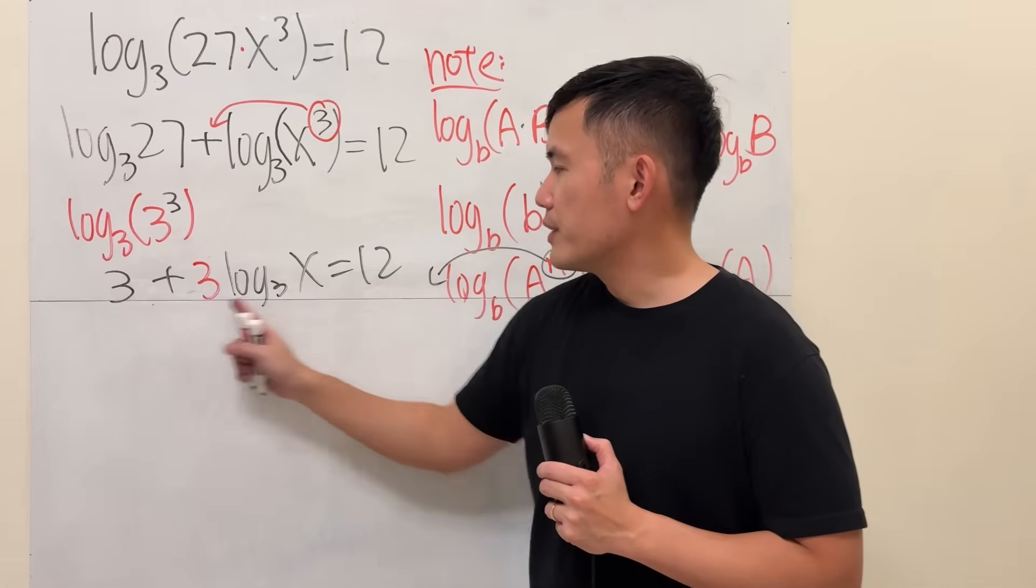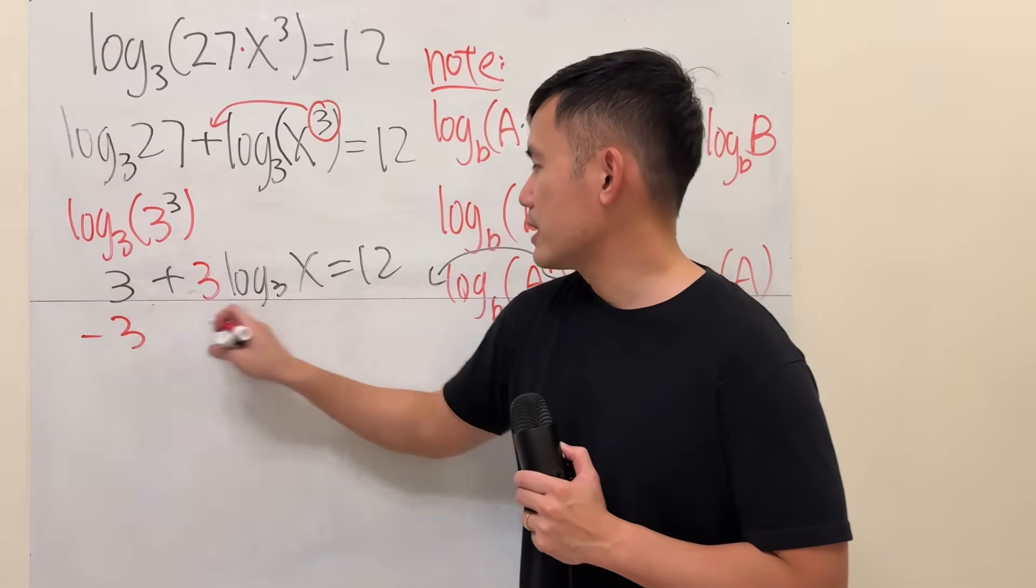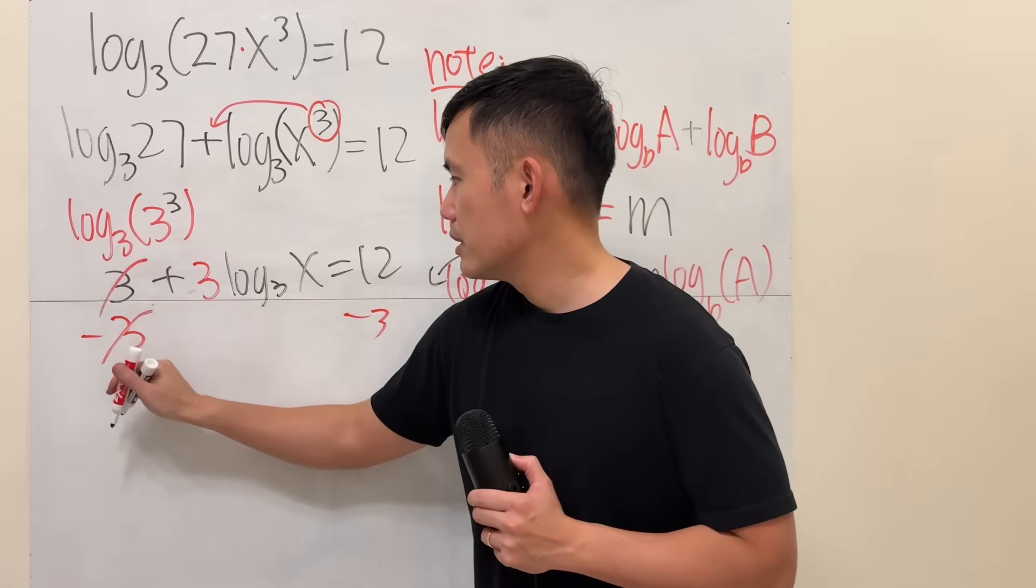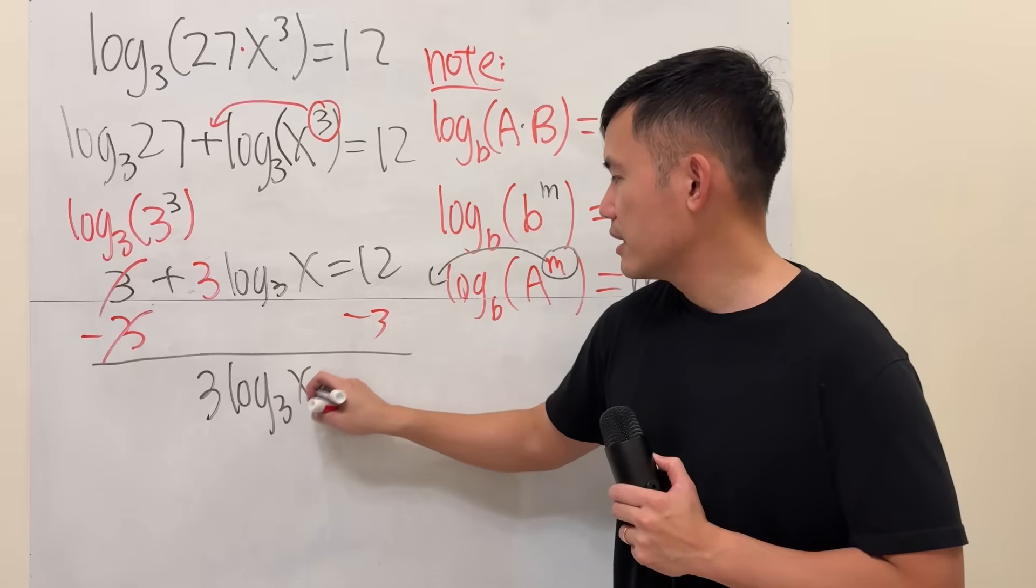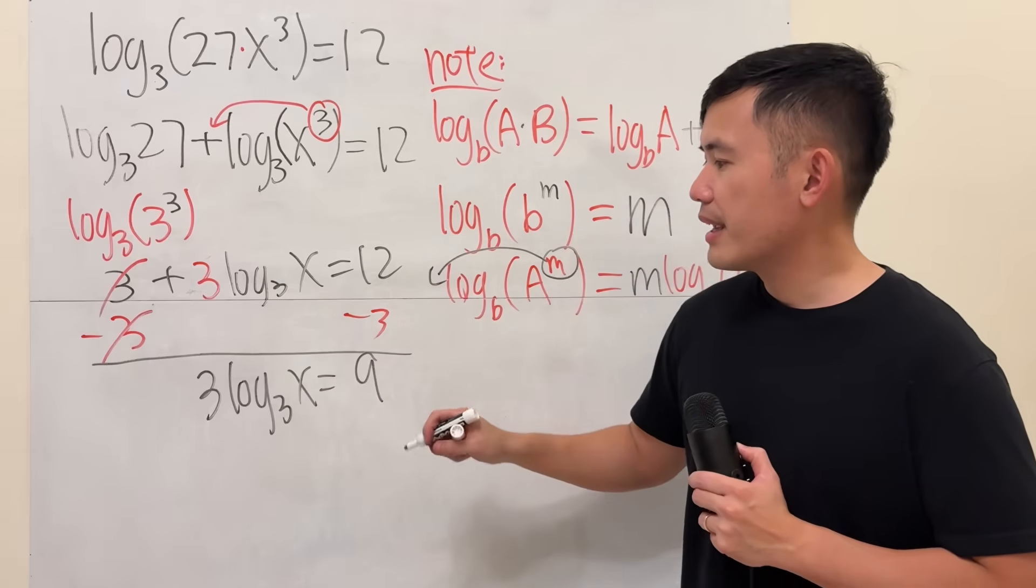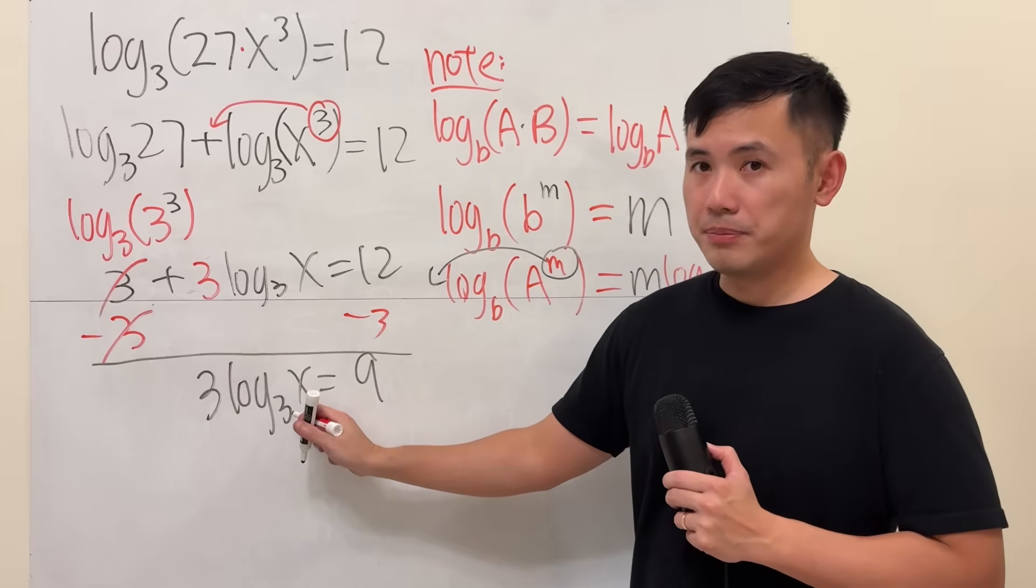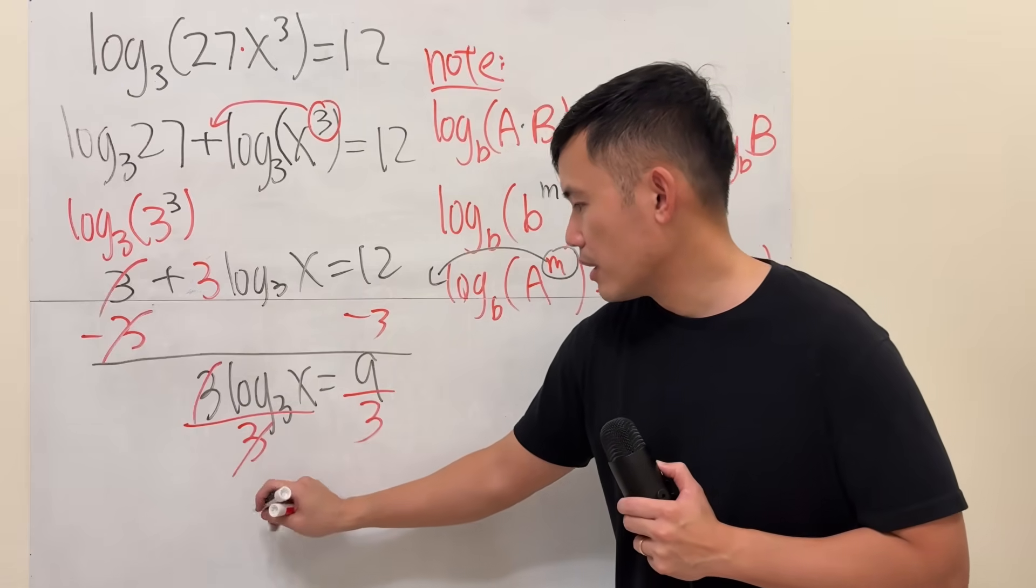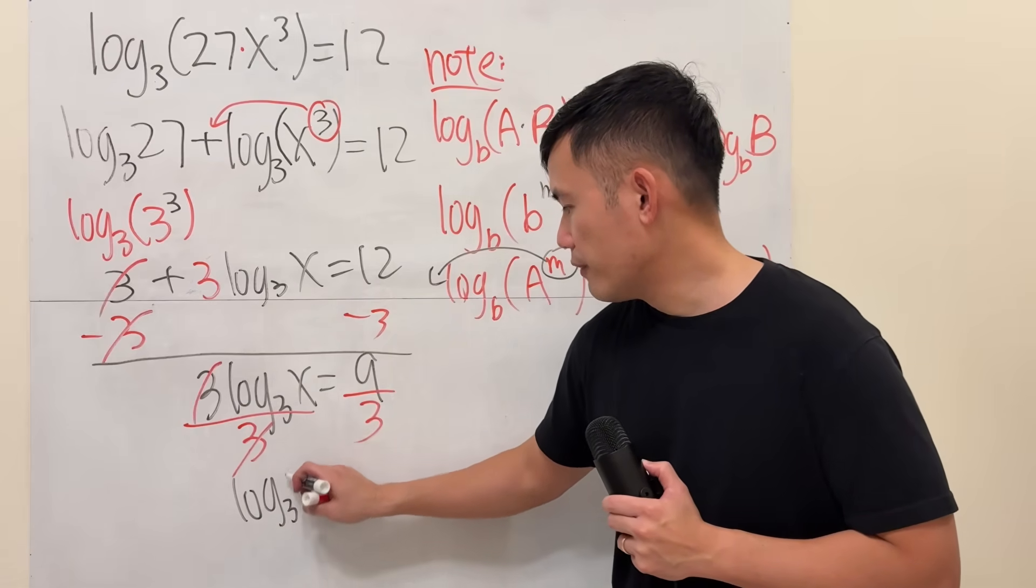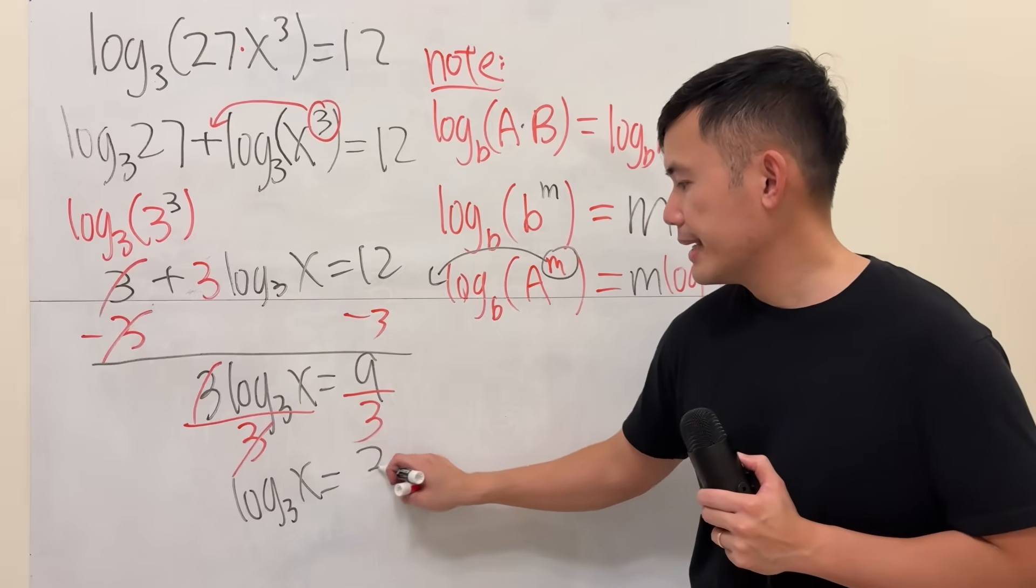Now, solving this equation, I'll just minus 3 from both sides, cancel, and then we get 3 log base 3 of x, it's equal to 9. This is 3 times this part, right? So I'll just divide both sides by 3. Cancel. So log base 3 of x, it's equal to 3.